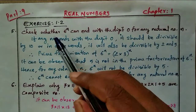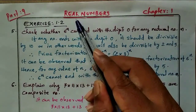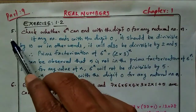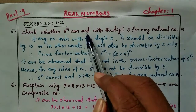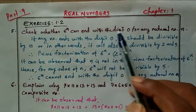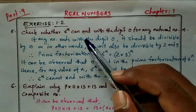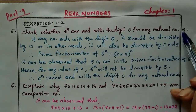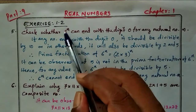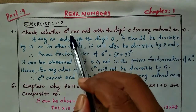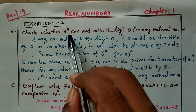Dear students, welcome to my video. Last day we discussed Exercise 1.2 from Real Numbers, Chapter 1. Continuing with Question 5: check whether 6 raised to n can end with the digit 0 for any natural number n. We have to substitute any number in place of n and check whether the result ends with 0.